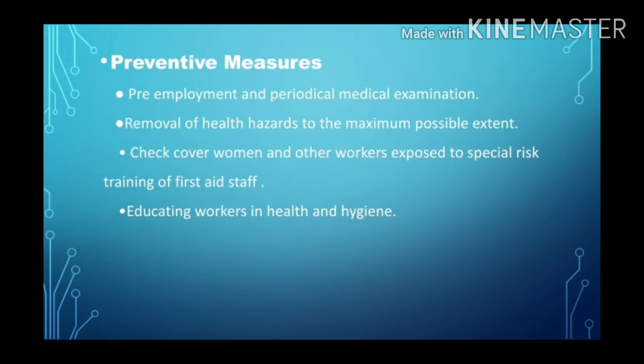For the protection against occupational hazards — whether chemical substance hazards, biological hazards, environmental hazards, or atmospheric conditions — measures can be taken at the employee and industry level. The first preventive measure is pre-employment and periodical medical examination, which helps prevent health issues from the very beginning of employment.